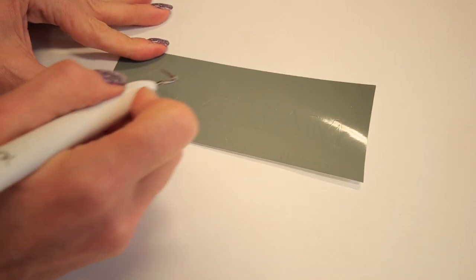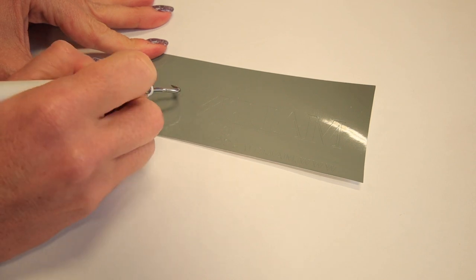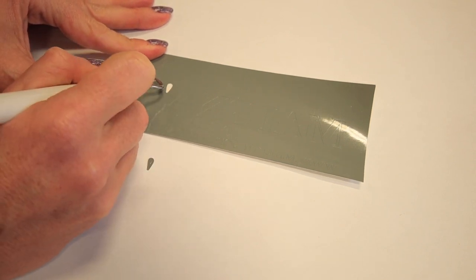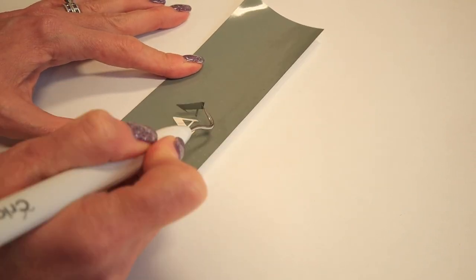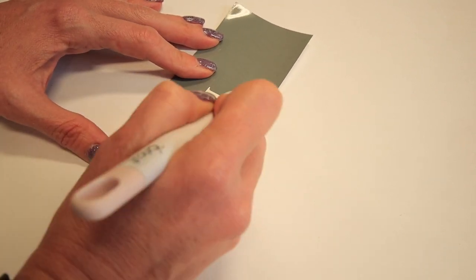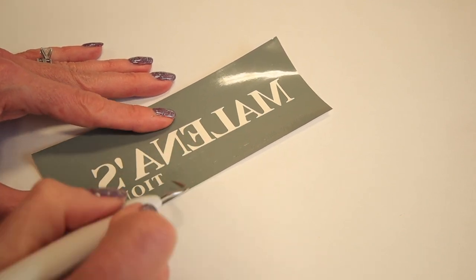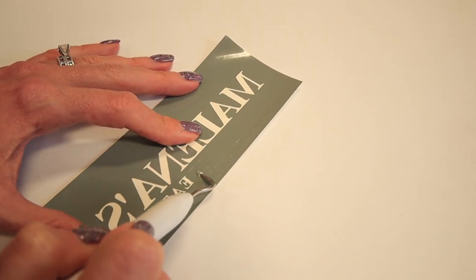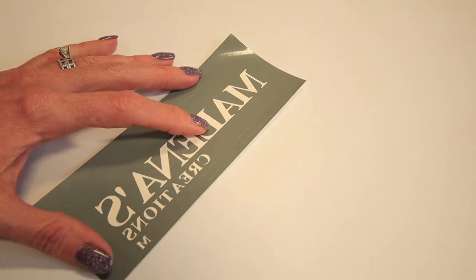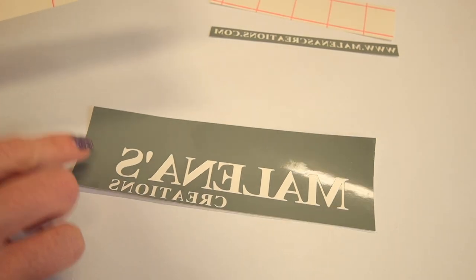Here I'm going to start weeding out all of the letters. So I am basically going to leave the backing and pull out all of the letters. Usually it's the opposite when you're doing vinyl printing or iron-on. You're going to pull off the backing and leave the letters. Well in this case we're going to pull all the letters out.